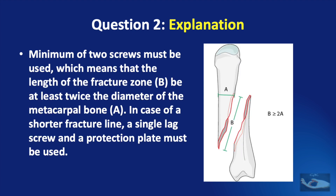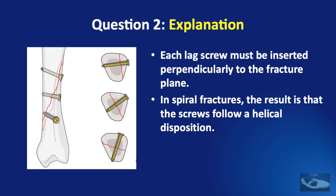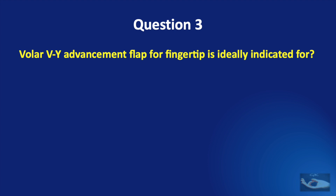Such examples of spiral or long oblique fractures are ideal for lag screw fixation. A minimum of two screws must be used, which means that the length of the fracture zone must be at least twice the diameter of the metacarpal bone where the fixation is being done. In case of a shorter fracture line or a short oblique fracture, a single lag screw may not be enough and a protection plate must be added. Each lag screw must be inserted perpendicular to the fracture plane. In spiral fractures, the result is that the screws follow a helical disposition.